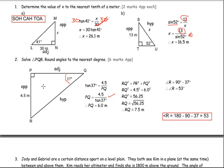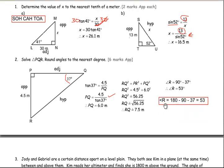Now I could use trig to find the hypotenuse, but since I know two sides in a right triangle I can use the Pythagorean theorem. RQ² = PR² + PQ² = 4.5² + 6² = 56.25, so RQ = √56.25 = 7.5 meters. To find angle R: since it's a right triangle, the two non-right angles add to 90, so angle R = 90 − 37 = 53 degrees. You could also compute 180 − 90 − 37 = 53 degrees.